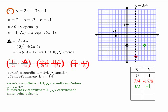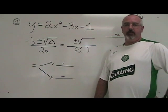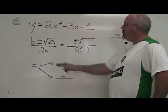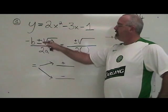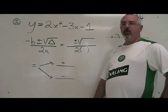In example one, we have two zeros, and we are going to use the quadratic formula to find them. To find the x-intercepts of our parabola, we are using the formula negative b plus or minus the square root of delta over 2a. This is our quadratic formula.